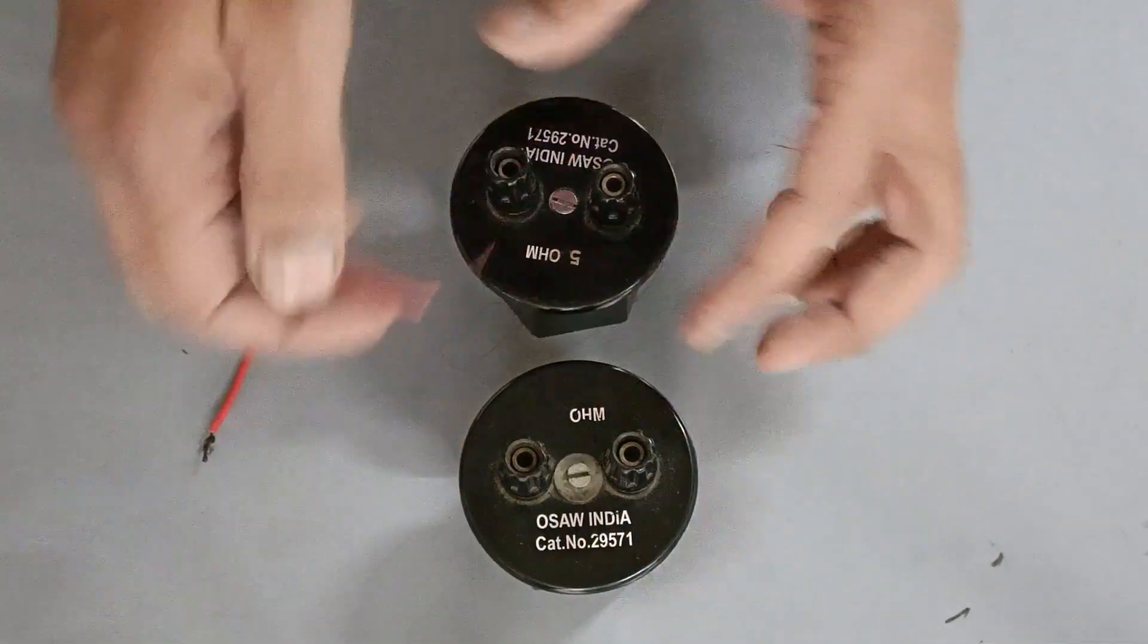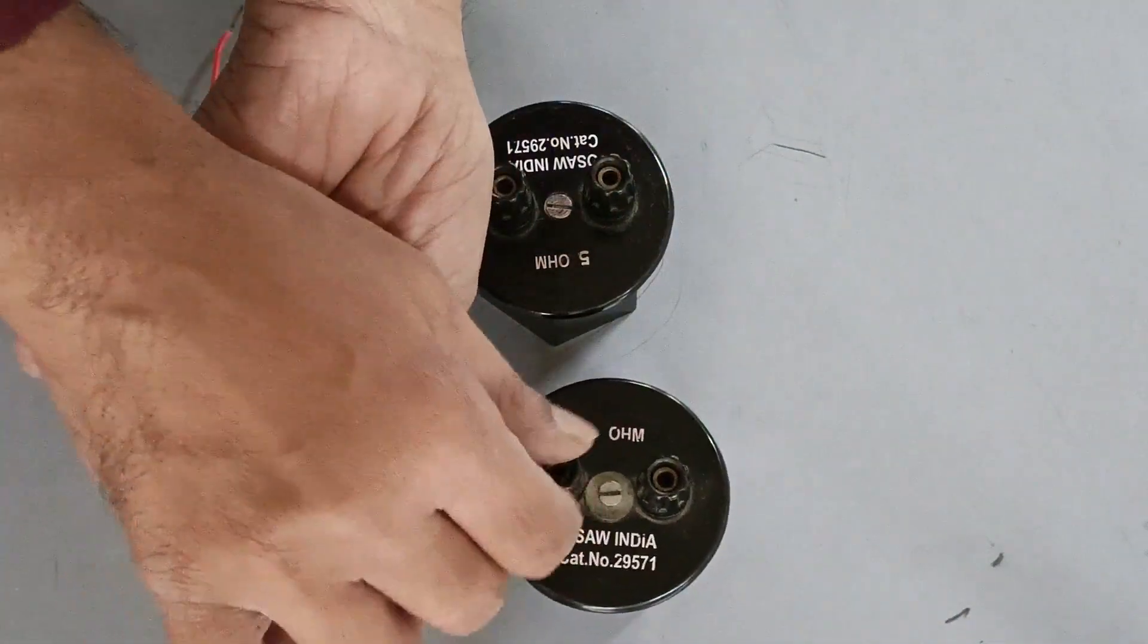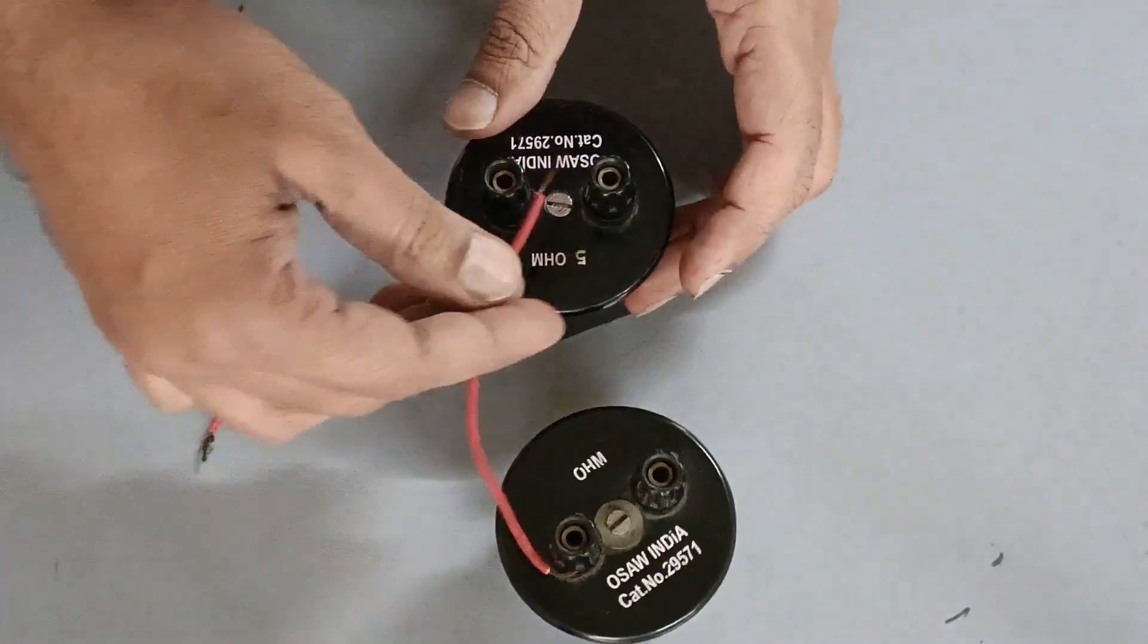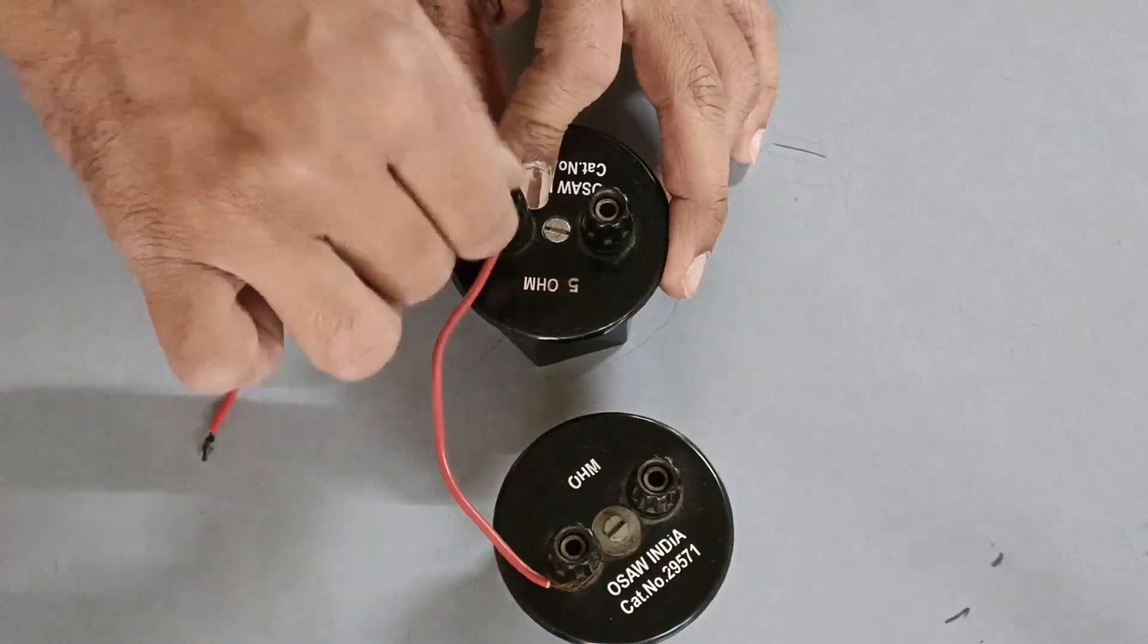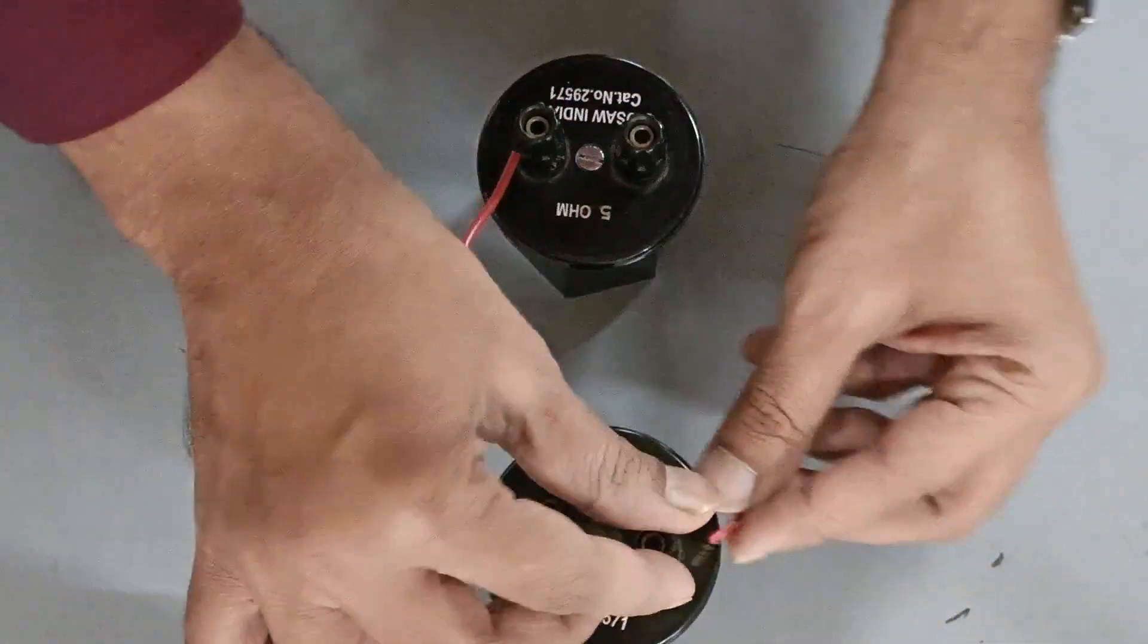Here we have two resistances of 5 Ohm each. Connect the terminals using connecting wires as shown. Please ensure the connections are tight.